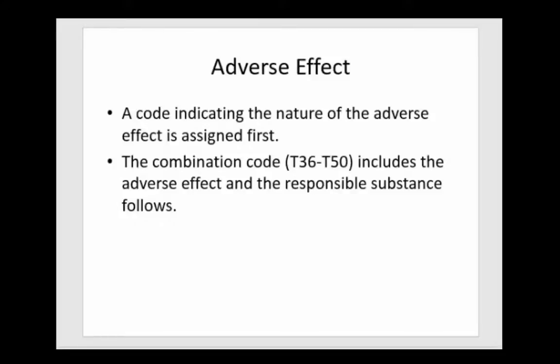When we're coding an adverse effect, we're going to put the code that indicates the nature of the adverse effect first, and then the combination code — which is in the T codes — that includes the adverse effect and the responsible substance following. That's the range of T36 to T50.